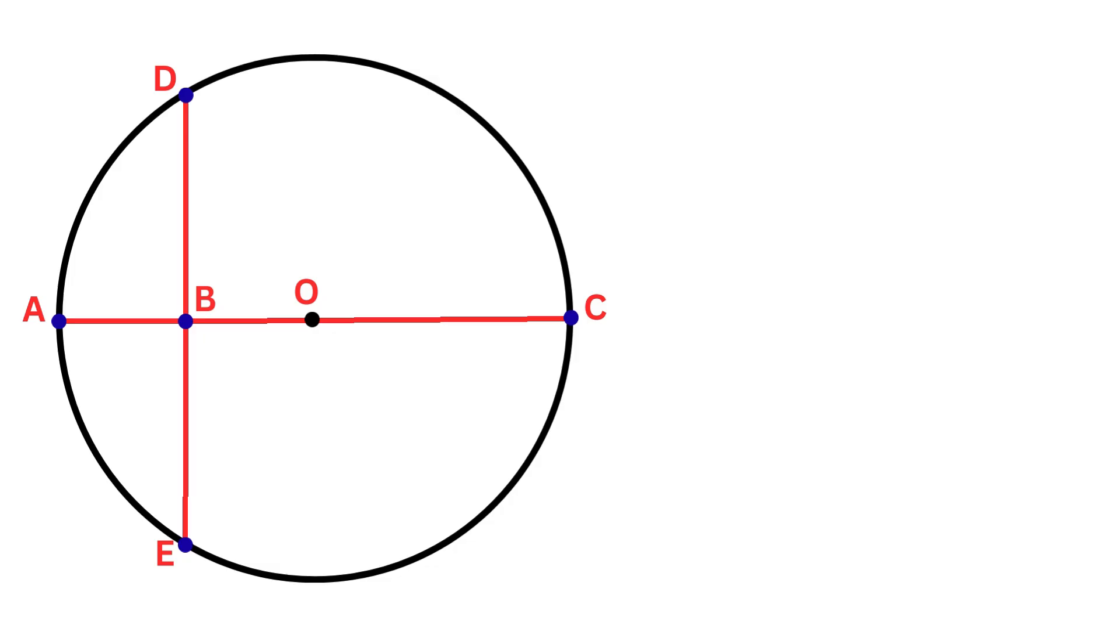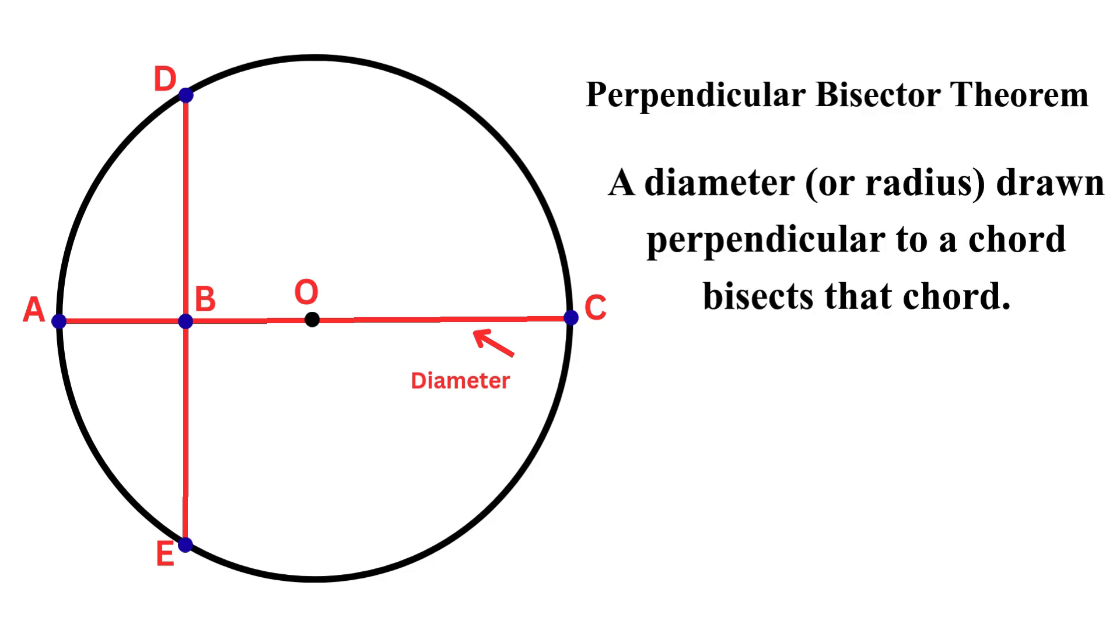Notice that chord AC passes through the center O. This chord is actually a diameter of the circle. Now we have a fundamental chord theorem called the Perpendicular Bisector Theorem, which states that a diameter drawn perpendicular to a chord bisects that chord. This means the diameter divides chord DE into two equal segments.